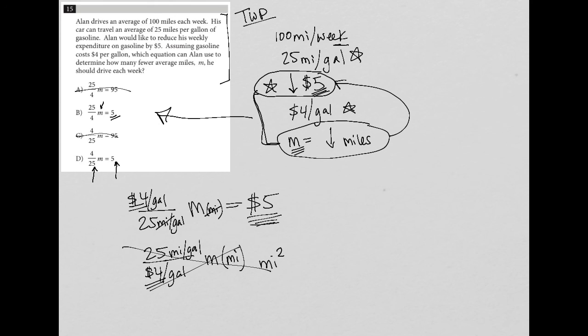So because of that, I'm going to say that the twenty five fourths is not the fraction that I want to multiply M by. It's this four over twenty five.